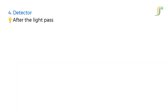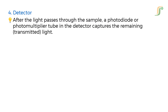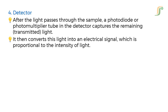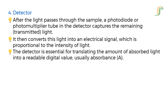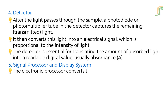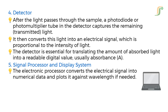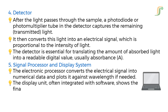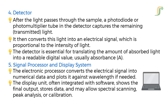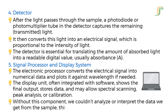After the light passes through the sample, a photodiode or photomultiplier tube in the detector captures the remaining transmitted light. It then converts this light into an electrical signal, which is proportional to the intensity of light. The detector is essential for translating the amount of absorbed light into a readable digital value, usually absorbance. The electronic signal processor converts the electrical signal into numerical data like absorbance or transmittance and plots it against wavelength if needed. The display unit, often integrated with software, shows the final output, stores data, and may allow spectral scanning, peak analysis, or calibration. This is where science meets usability.